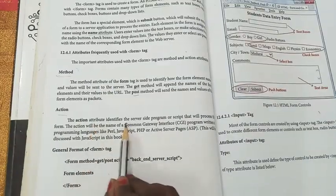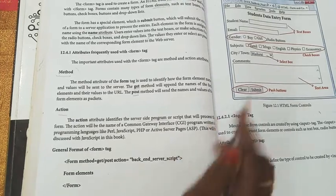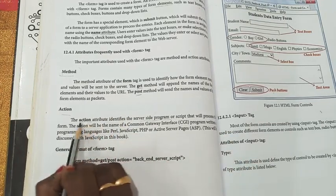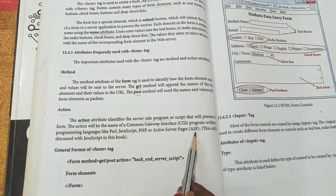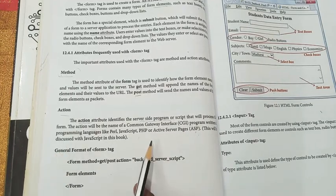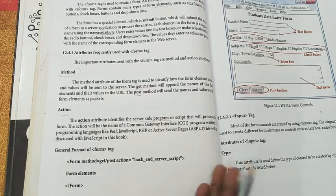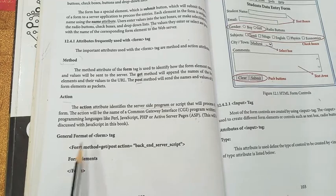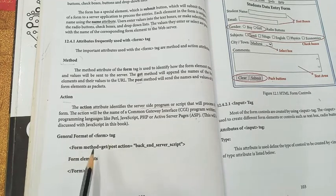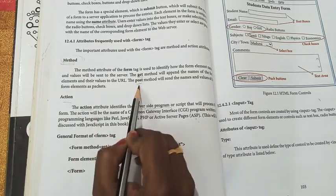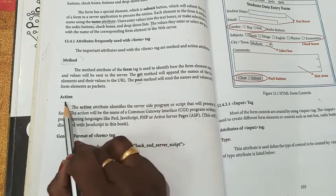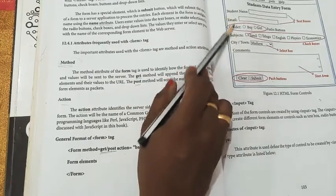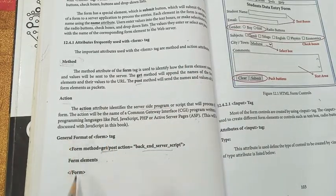The action attribute identifies the server-side scripting program. The server side is going to submit and the receiver gives some actions, then sends the information back to the sender. The general syntax is: the form keyword as an HTML tag, with two attributes — method (which can be POST or GET) and action (which is the back-end server name). Then you include the different form elements inside, and after completing the form you close the form tag.